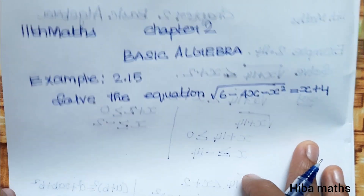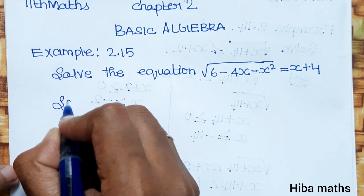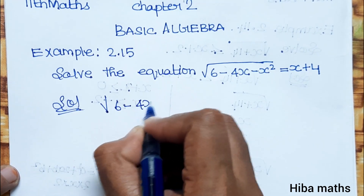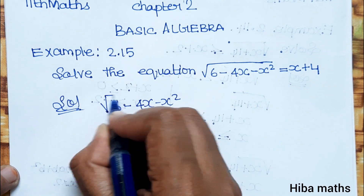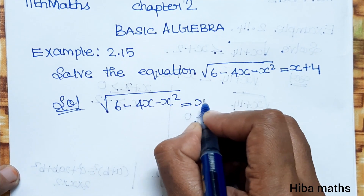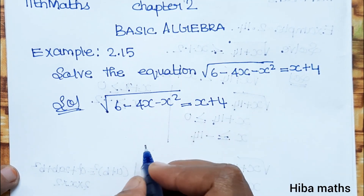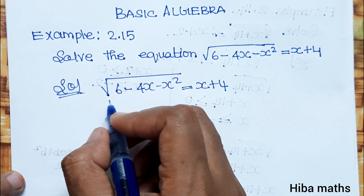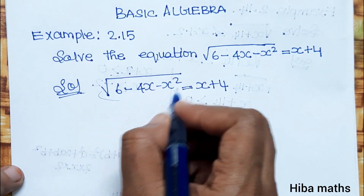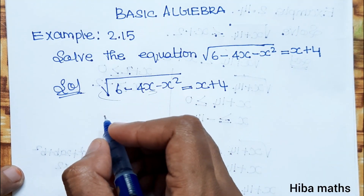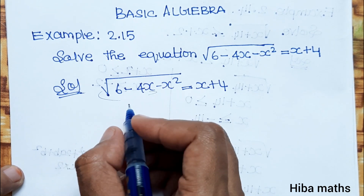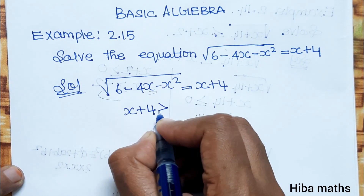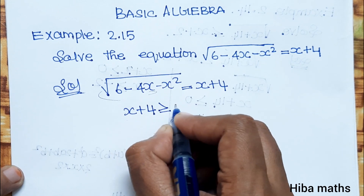So in the equation we will solve: 6 minus 4x minus x squared is equal to x plus 4. The square root should be greater than or equal to 0.